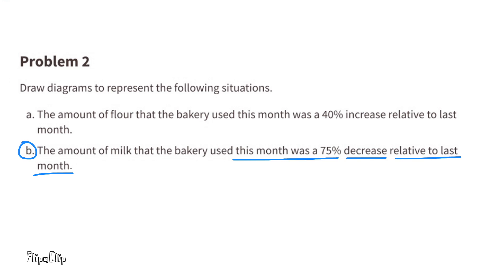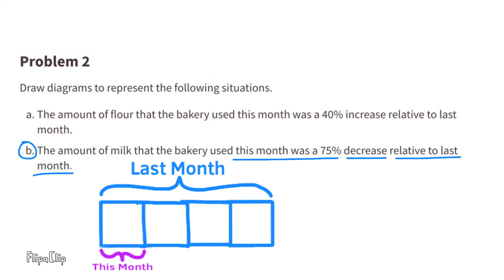B. The amount of milk that the bakery used this month was a 75% decrease relative to last month. This diagram represents the amount of milk that the bakery used last month. Since this month was a 75% decrease relative to last month, we need to remove 75%. If we remove 75% of last month, the remaining section would be 25% of last month. This section represents this month, which is a 75% decrease compared to last month.